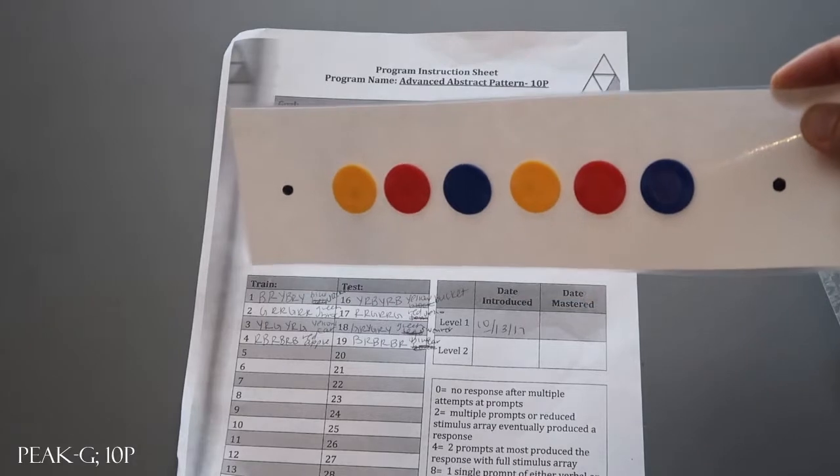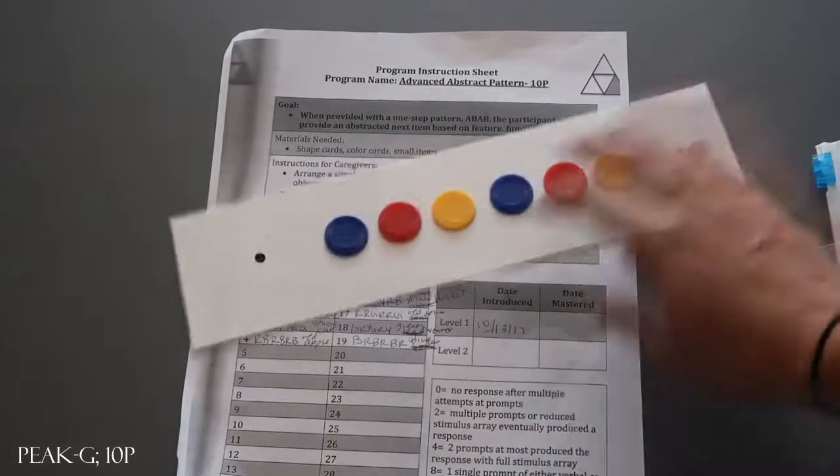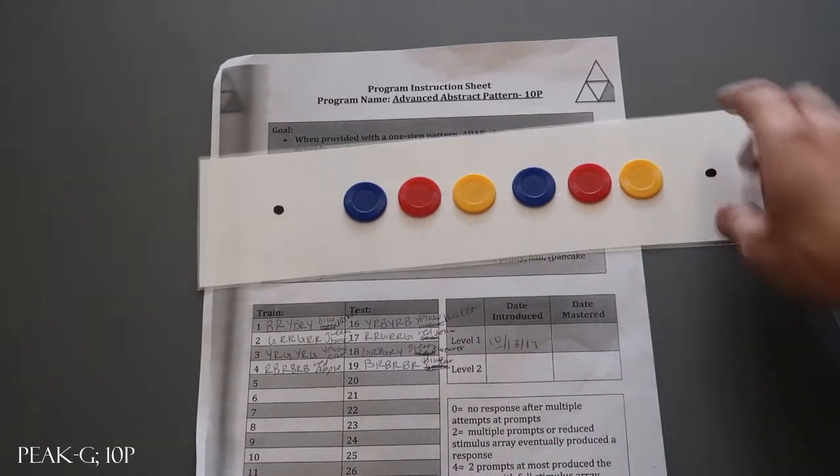So for example, for blue, red, yellow, for train it goes this way: blue, red, yellow, blue, red, yellow, what comes next?